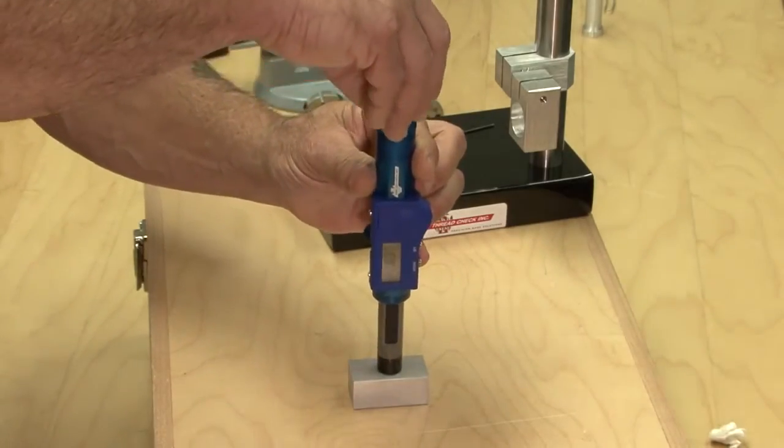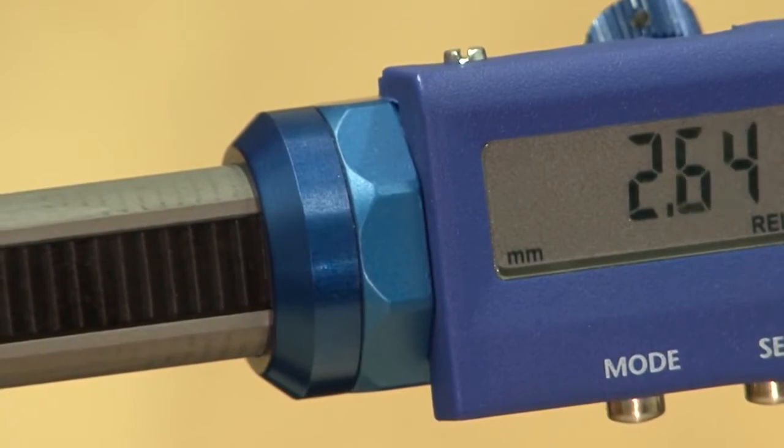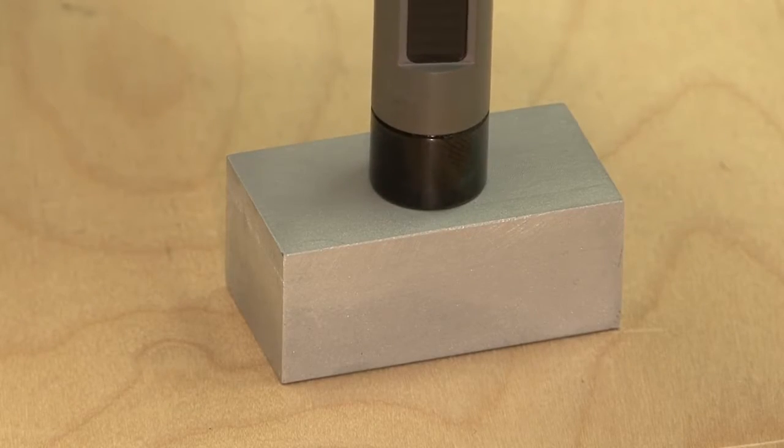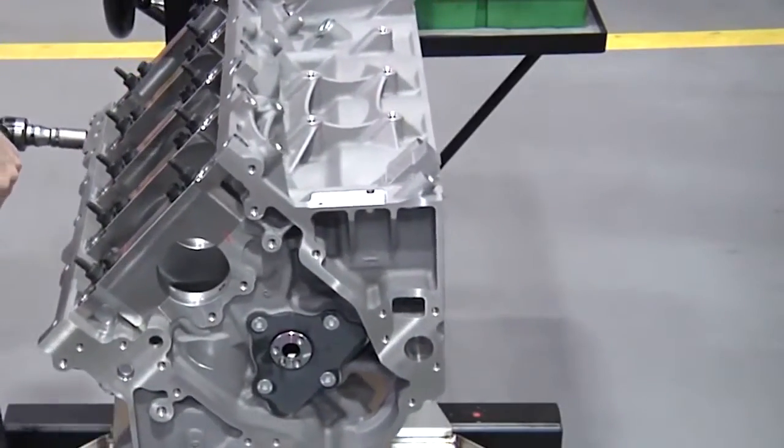The alternate method entails working with the setting screw on the back portion of the knurled knob loose, which allows the thread gauge to be rotated into the part. This is ideal for large components and assemblies, such as engine blocks.